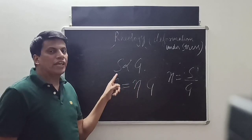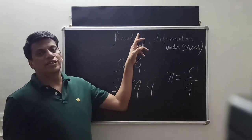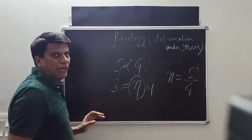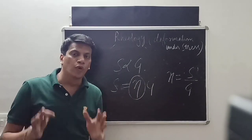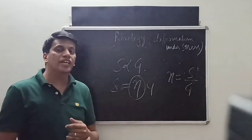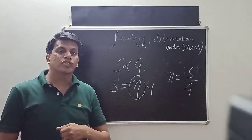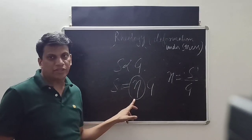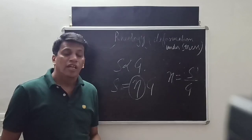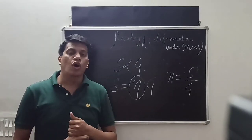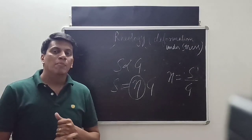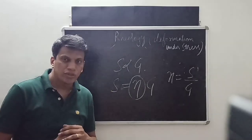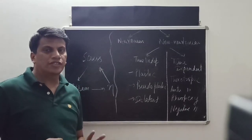Materials which are Newtonian: on application of stress there will be a rise in strain, and their viscosity remains constant. Viscosity is basically a viscous drag or resistance to flow of fluids. The inverse of viscosity is called fluidity. Kinematic viscosity is the absolute viscosity of a substance divided by its density. The unit of simple viscosity is poise or centipoise, the SI unit is Pascal-seconds, and the unit of kinematic viscosity is stokes.